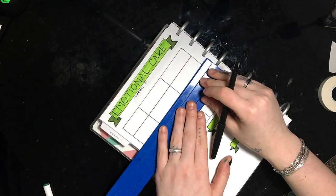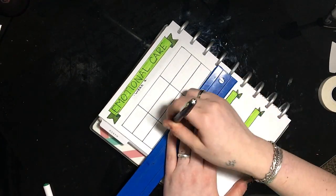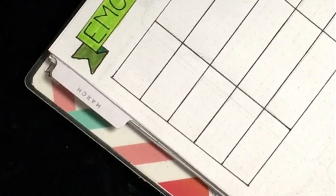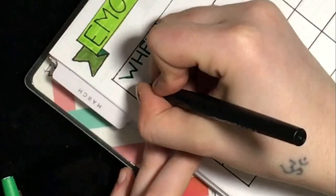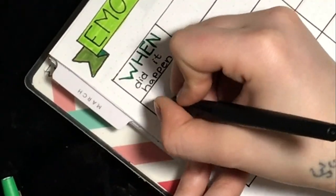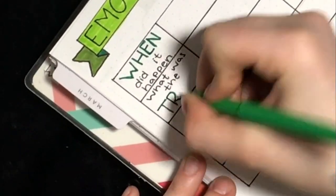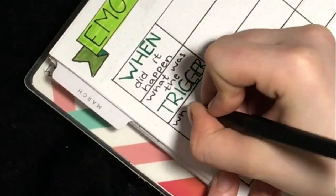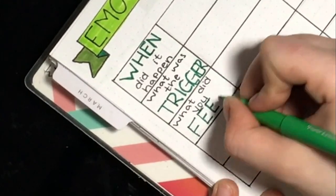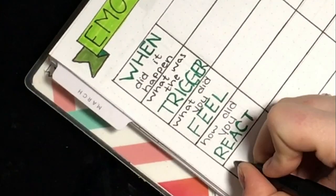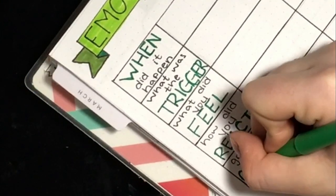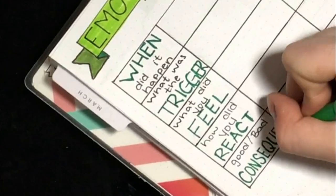The first little box is when did it happen? When did you feel the emotion? The second box is what was the trigger? What triggered you to feel that emotion? The third box is what did you feel? What emotion were you feeling after being triggered? The fourth box, how did you react? How did you react to the emotion that you were feeling? And the last box is the good or bad consequences. So what were the consequences of the reaction?